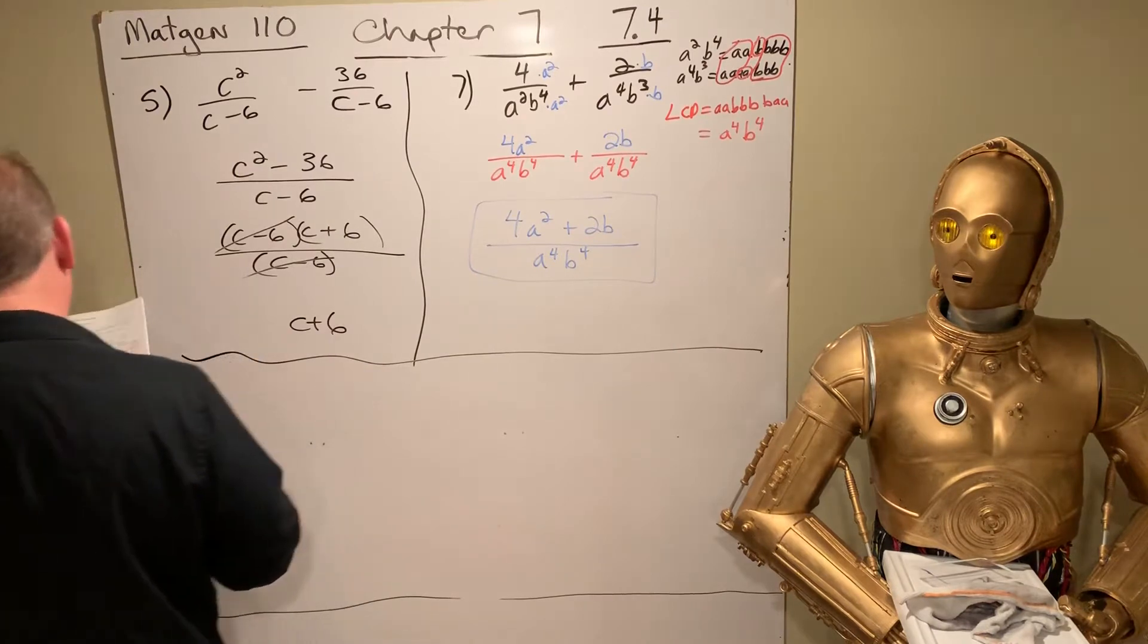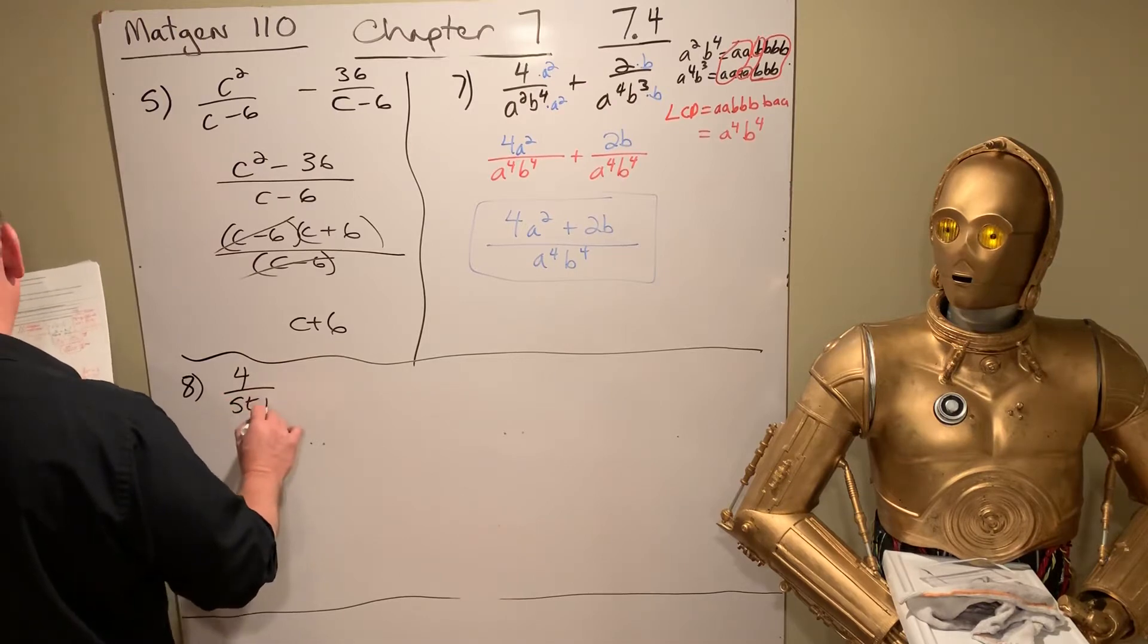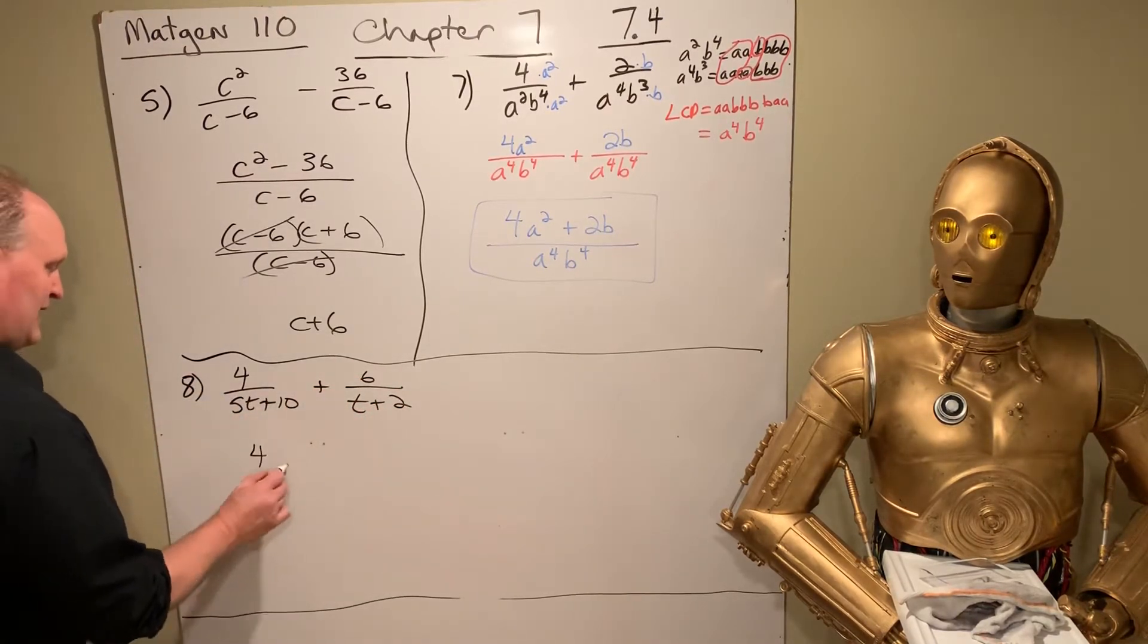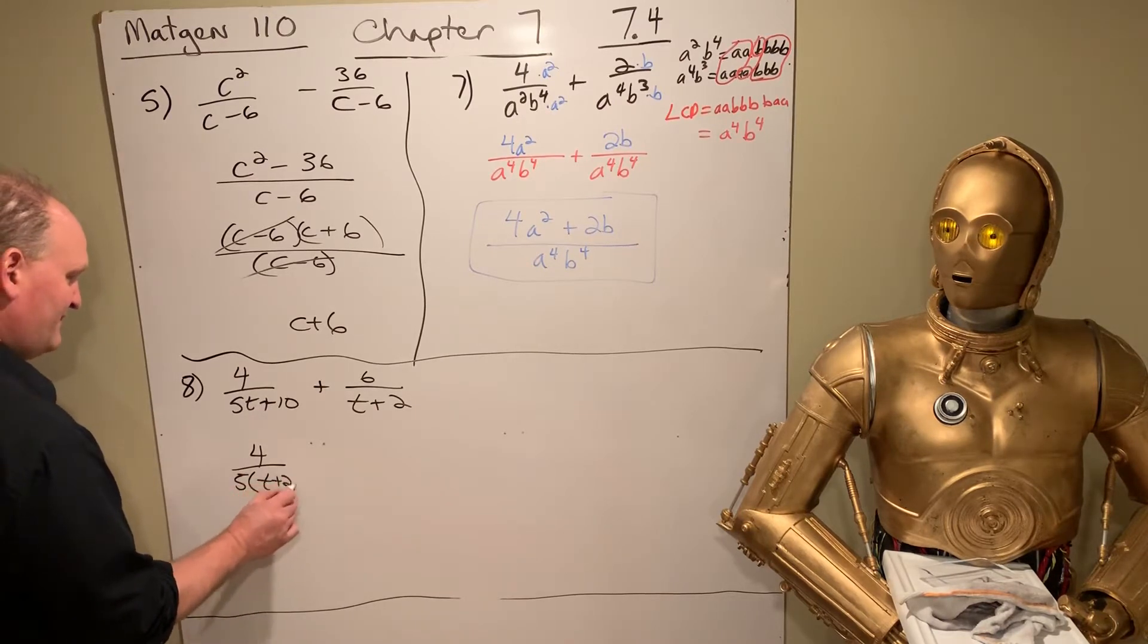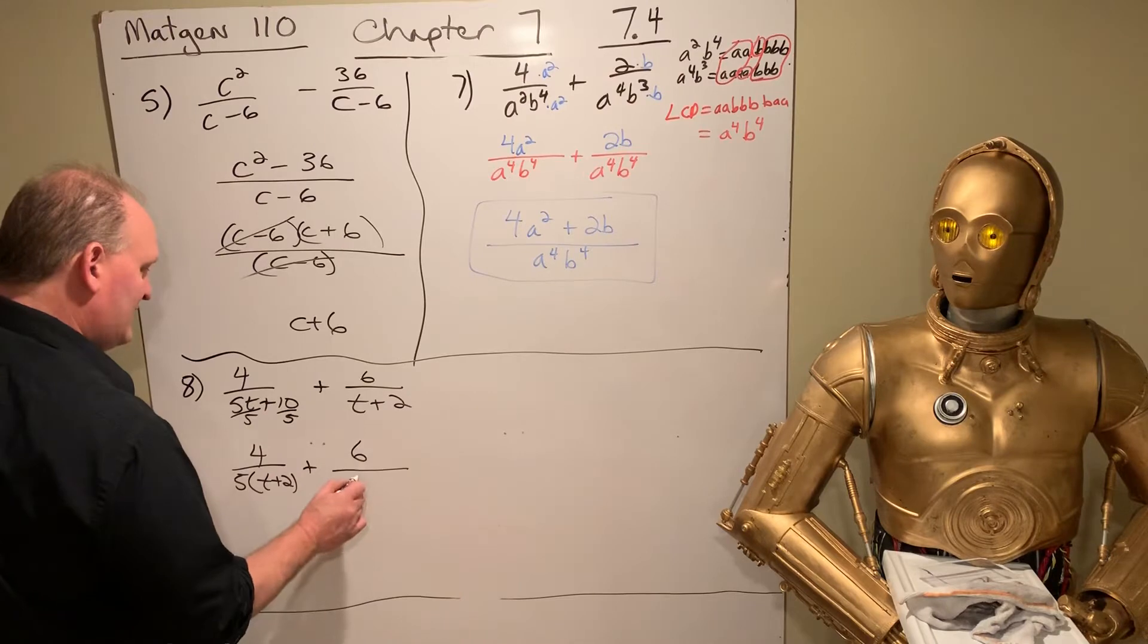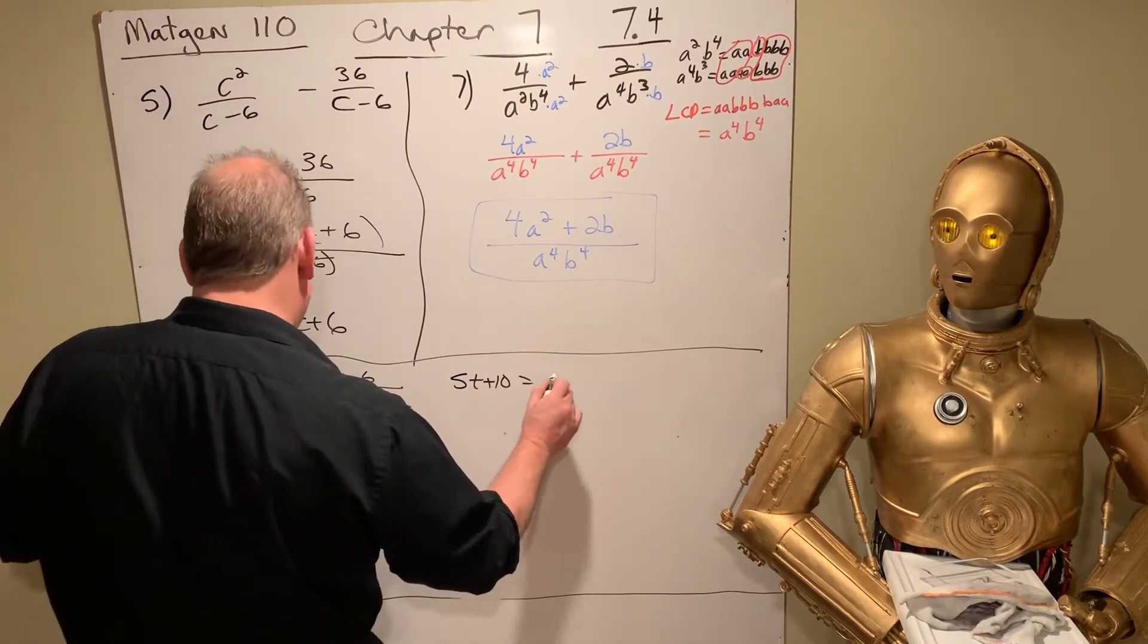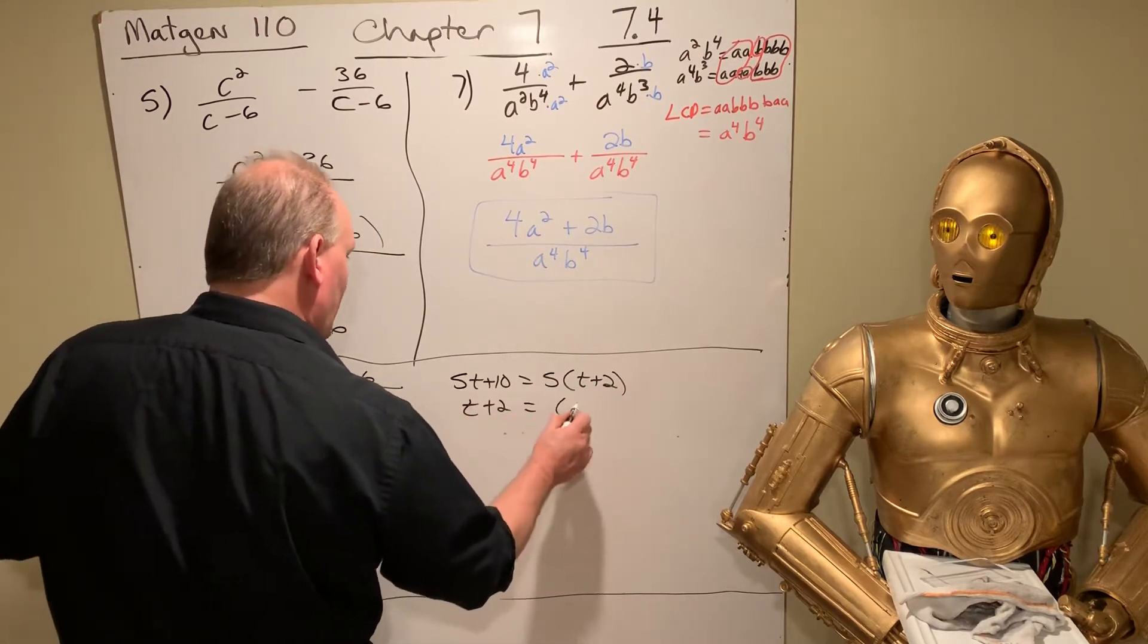Let's look at number 8. That's 4 over 5T plus 10 and plus 6 over T plus 2. So on this one, we factor out a 5 and we get T plus 2. This one, it's already kind of factored. We have T plus 2. So now let's go over here and find the LCD. So we have it factored. We got 5T plus 10 is equal to 5 times T plus 2. And we got T plus 2.